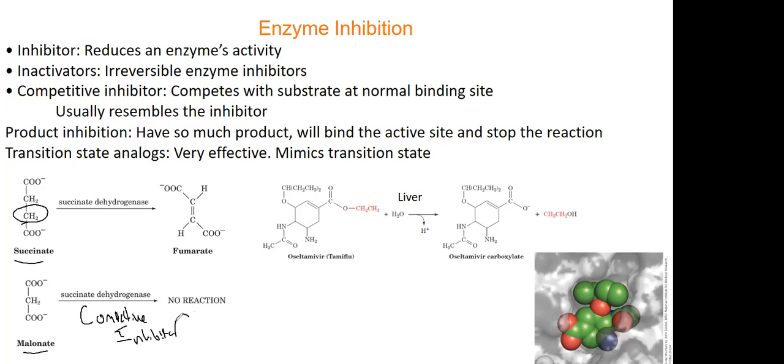And so some other types of inhibitors we have. We have product inhibition. What product inhibition is, is that you have so much product, you will bind the active site and stop the reaction. And this happens in your body naturally all the time, especially in glycolysis and the citric acid cycle. So if you, right after lunch, your body is full of ATP because you just ate, right? And so what's going to happen, since you're full of ATP, gluconeogenesis will stop.